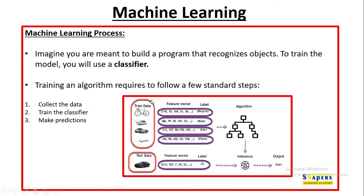Consider a scenario where you are given four objects and asked to classify them. As a human, you can visually classify them easily — this is a cycle, this is a boat, this is a car, this is an airplane. You can do this because you have been trained from a young age, learning that a cycle looks like this, a boat looks like this, and so on. We are trying to mimic this in a machine.